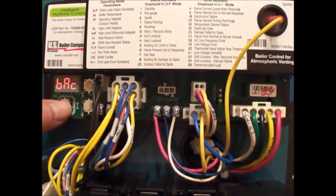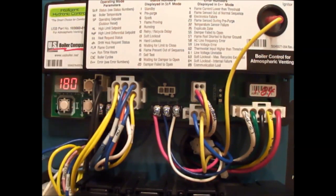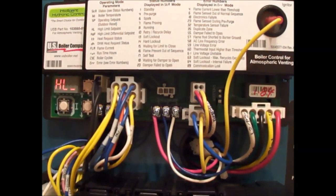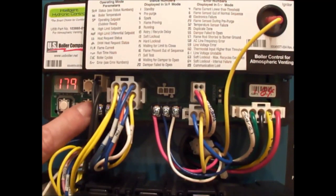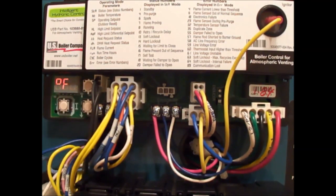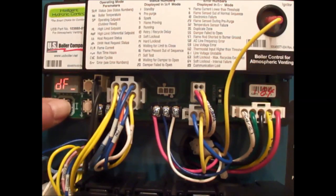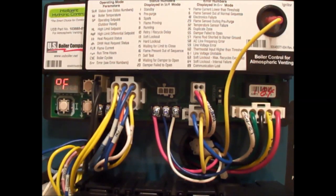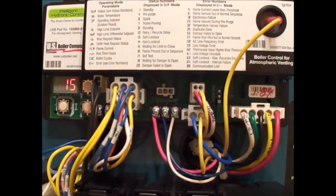The first one we look at is high limit. If we want to change the high limit, we can change it up or down. It is defaulted to 180. If we make a change, as soon as we hit the I button it saves automatically.